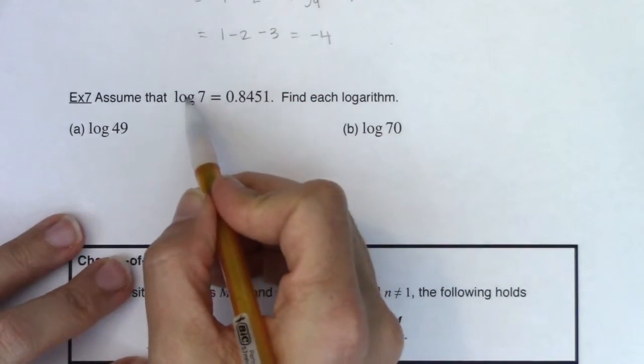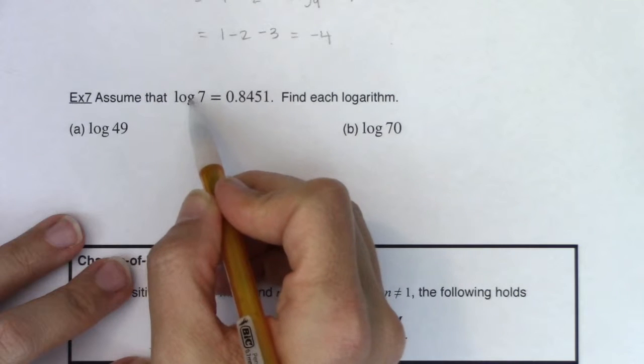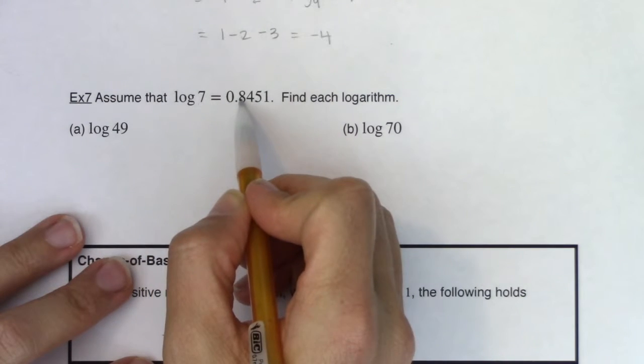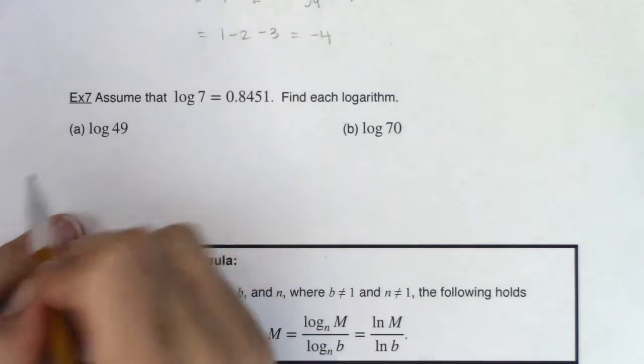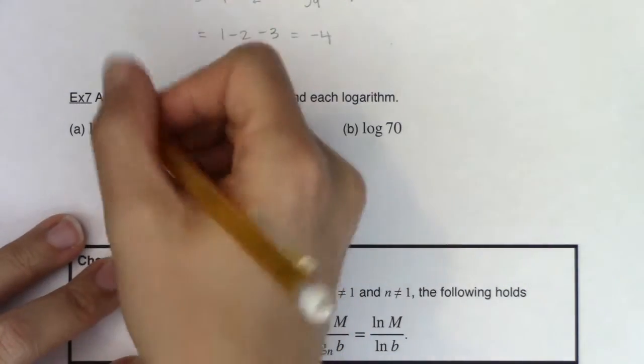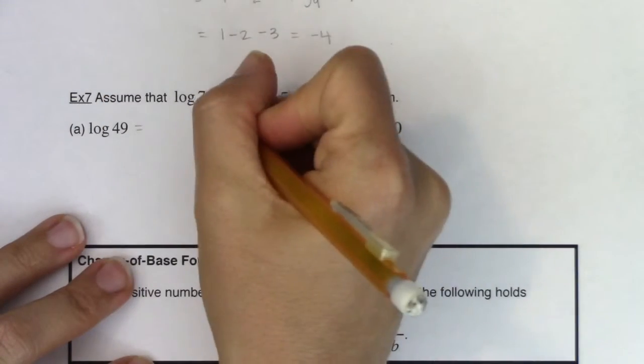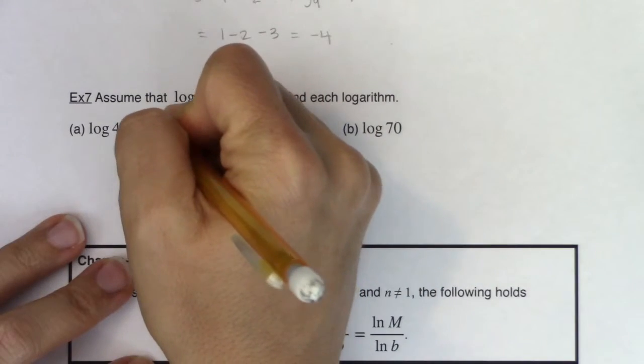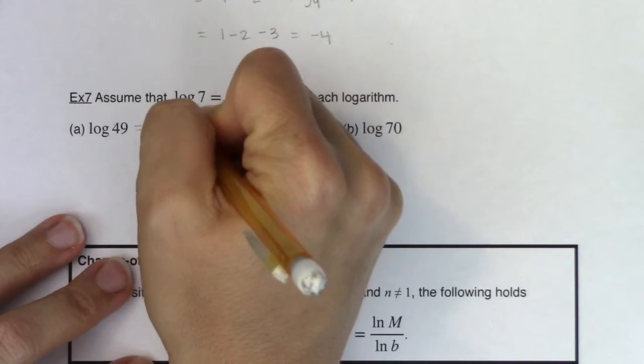So I want us to think. We know log base 10 of 7 is equal to 0.8451. How could we then find log base 10 of 49? Well, I'm hoping you're thinking, I know log base 10 of 7 and 49 is 7 squared.